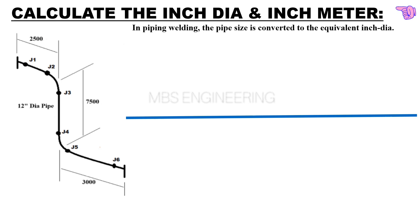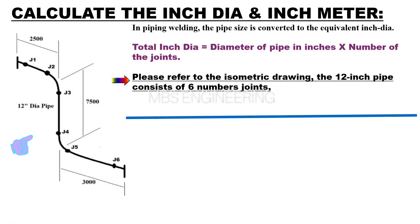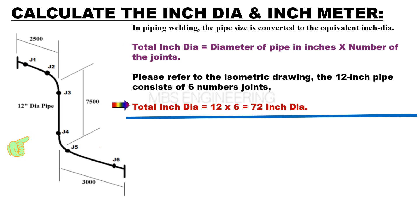We will learn how to calculate the inch dia and inch meter. In piping welding, the pipe size is converted to the equivalent inch dia. Total inch dia equals the diameter of the pipe in inches multiplied by the number of joints. Please refer to the isometric drawing. The 12-inch pipe consists of 6 joints. Total inch dia equals 12 multiplied by 6. Therefore, the total inch dia is 72.